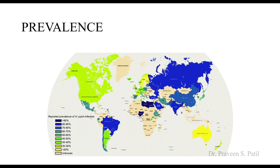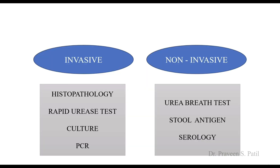Coming to the prevalence: India is said to have 80 to 90 percent of H. pylori infection in the population. This is a huge infection burden, but it will not cause symptoms in all infected people. Those who are symptomatic need to take treatment.